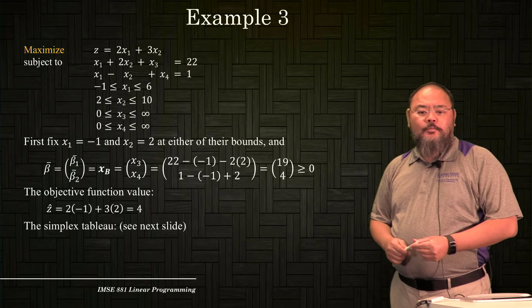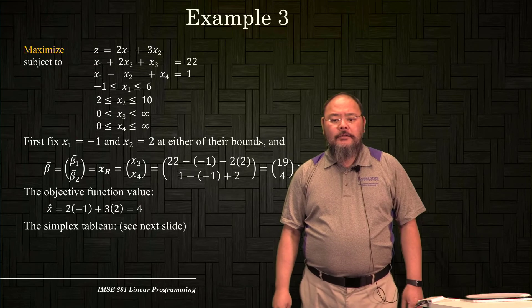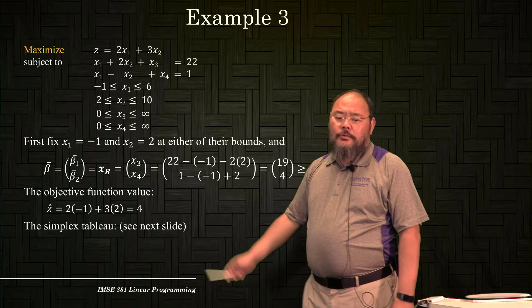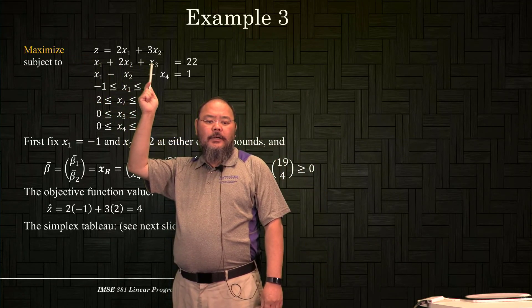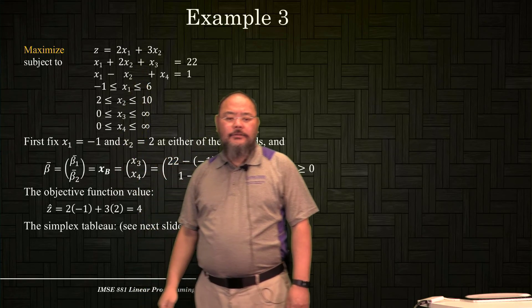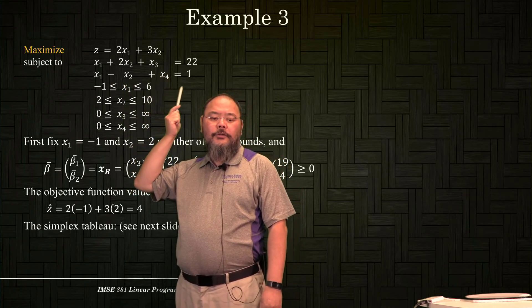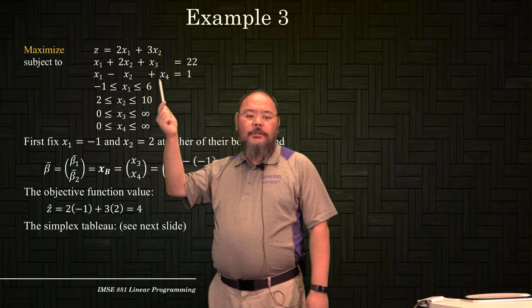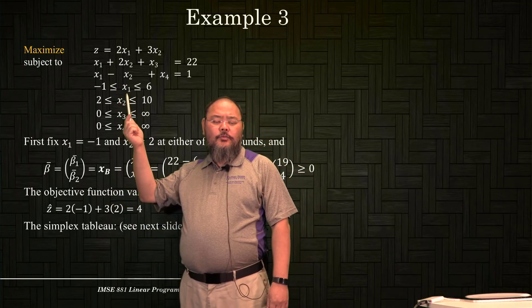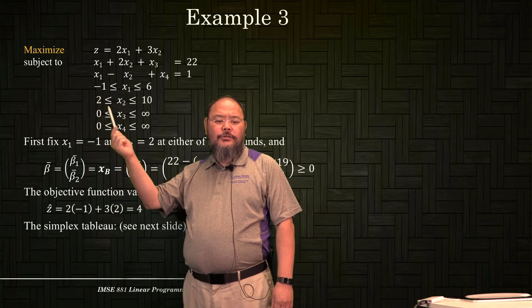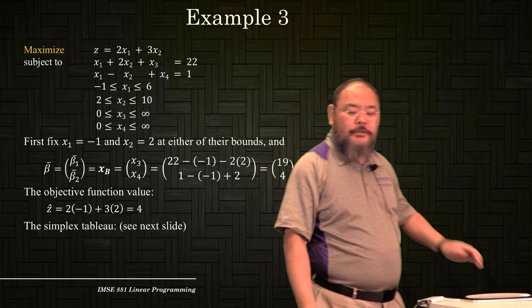Welcome back. Let's look at the example for the bounded variable simplex method again. We maintain a maximization problem: maximizing 2x1 plus 3x2, with constraints x1 plus 2x2 plus x3 equals 22 (x3 is a slack variable), and x1 minus x2 plus x4 equals 1 (x4 is another slack variable). x1 is bounded between -1 and 6, x2 between 2 and 10, while x3 and x4 are non-negative with no upper bound.